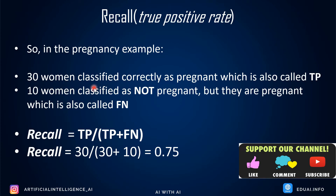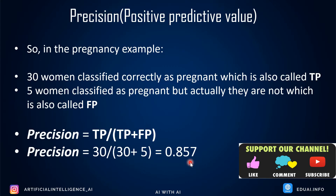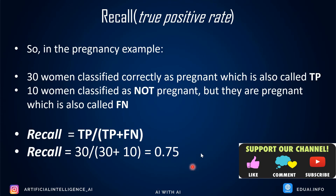Applying recall to our example: 30 women are actually pregnant and correctly classified (true positives), and 10 women are actually pregnant but the model says they're not (false negatives). Recall = 30 / (30 + 10) = 0.75. So precision is about 0.857 and recall is 0.75 — recall is noticeably lower, meaning the model misses a significant portion of actual positive cases.